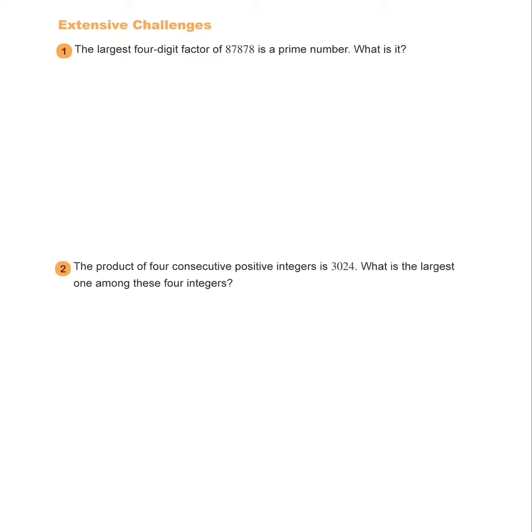So let's try to break it down into factors and see what is the largest four-digit factor that we can find. So first of all, for 87878, we can divide it by 2. So we get 43939, right?